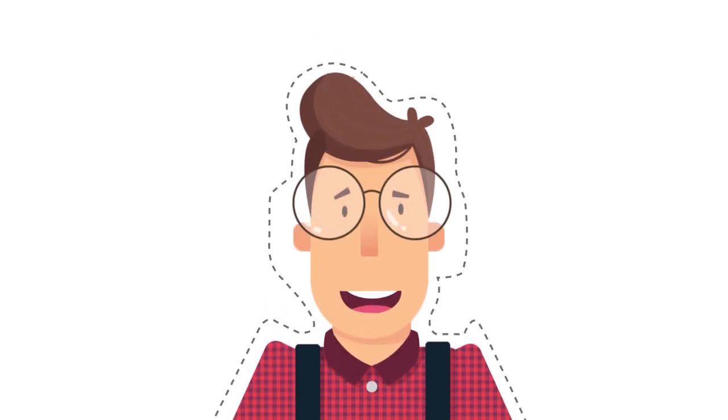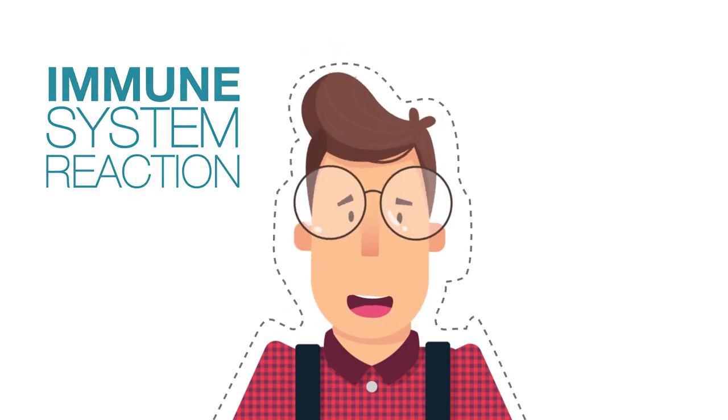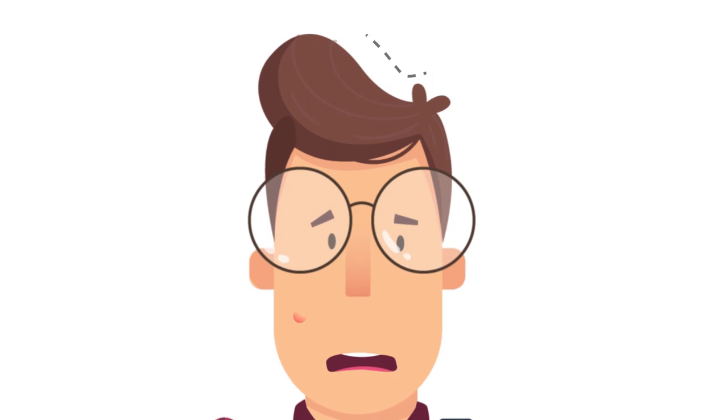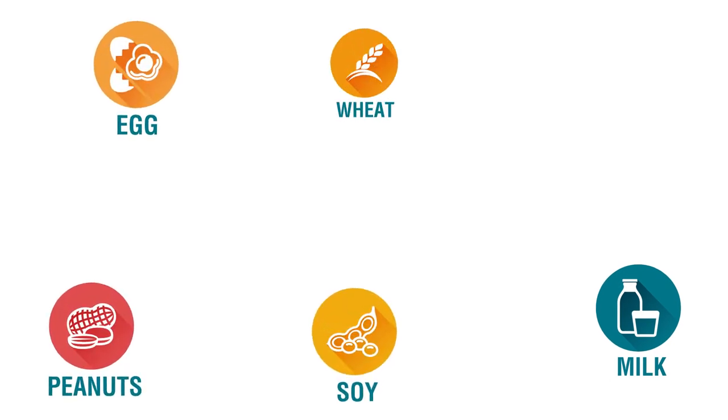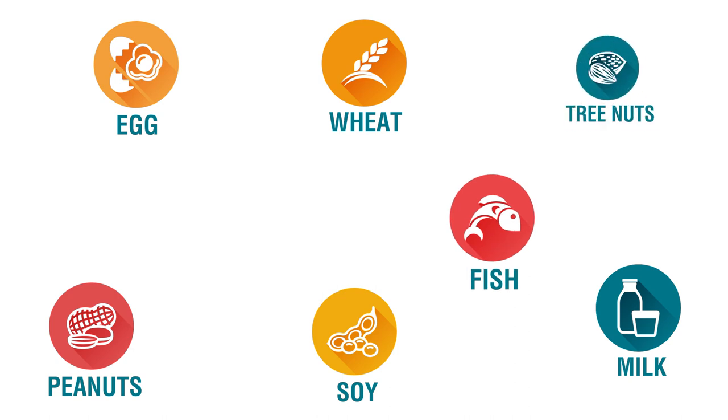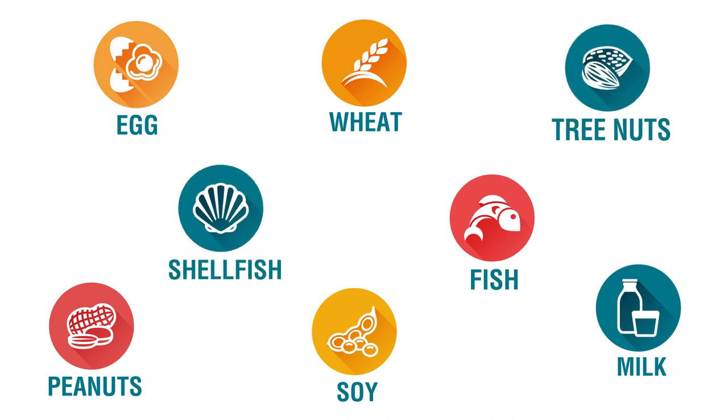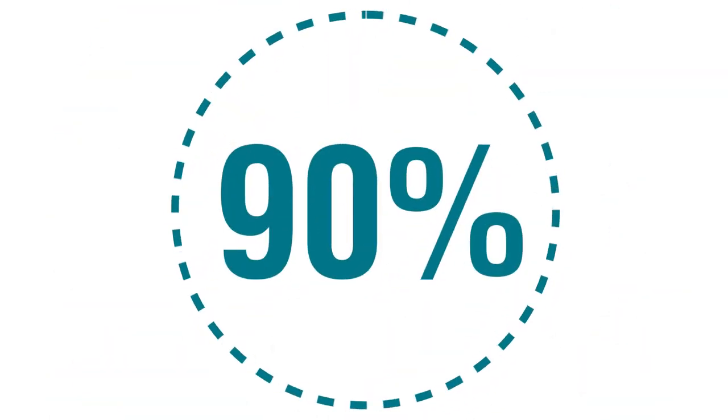Food allergy is an immune system reaction that occurs soon after eating a certain food. The most common causes of food allergy are milk, egg, peanut, soy, wheat, fish, tree nuts, and shellfish. These eight foods are responsible for 90 percent of all food allergic reactions.